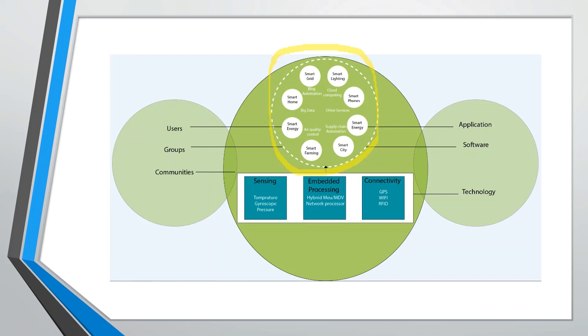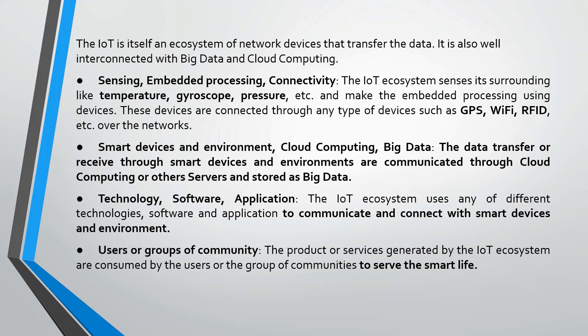The IoT ecosystem is about the combination of multiple IoT projects. For example, you can see smart home, smart energy, smart farming, and smart city. When you take a glance at all of these together, you will understand what is known as the IoT ecosystem. The IoT ecosystem is itself an ecosystem of network devices that transfer data.